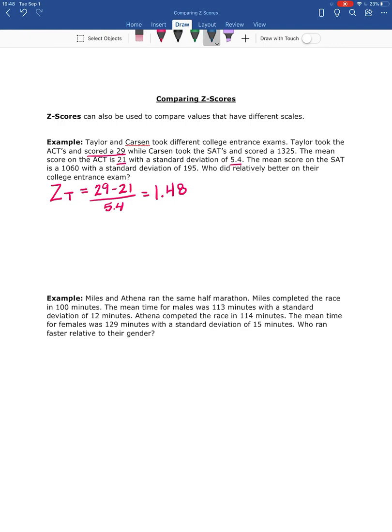So there's Taylor's Z-score. So she is almost 1.5 standard deviations above the mean for the test that she took. So now, let's do the same thing for Carson.